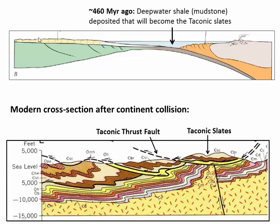At the same time our carbonate reef was going on on the shelf — or towards the end of that period — we had a lot of deep-water shales being deposited in the deeper water offshore. Once the Taconic collision occurred, these deep-water shales were thrust out of their deep-water position up and over the shelf rocks, and that's what we see here in this modern cross section: the Taconic slates riding along this thrust belt and sitting over many of the meta-sedimentary rocks of the shelf.